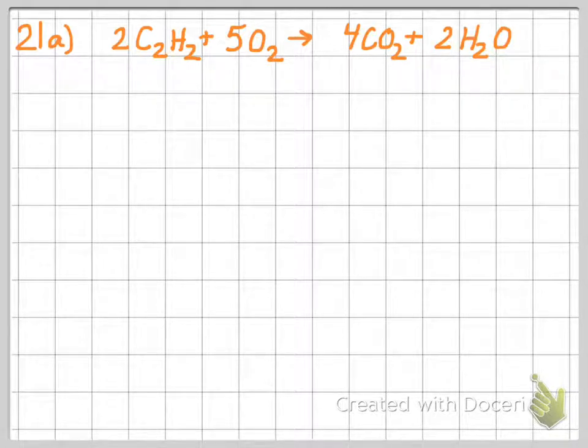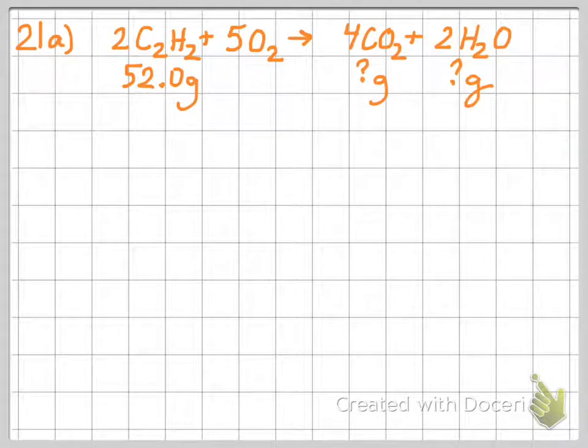So I like to summarize what they've given me. They tell me that I have 52 grams of acetylene, and we're asked to figure out how many grams of carbon dioxide and how many grams of water we produce. This is going to be two separate problems. We see that we are going from one substance to another, so we'll have to use a mole ratio.